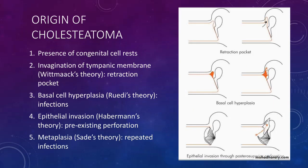The next theory is called the Wittmax theory. According to this theory, there is invagination of the tympanic membrane from the attic or posterior parts of pars tensa in the form of retraction pockets. The outer surface of the tympanic membrane is lined by stratified squamous epithelium which, after invagination, forms the matrix of cholesteatoma and lays down keratin in the pockets.